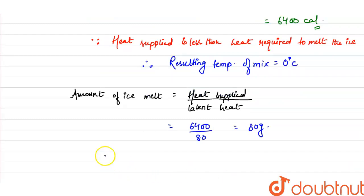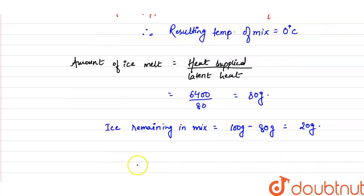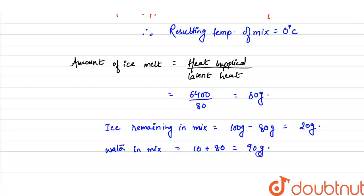Ice remaining in the mixture = 100 g − 80 g = 20 grams. Water present in the mixture = steam condensed (10 g) + ice melted (80 g) = 90 grams. So the final composition is 20 grams of ice and 90 grams of water, both at 0°C.